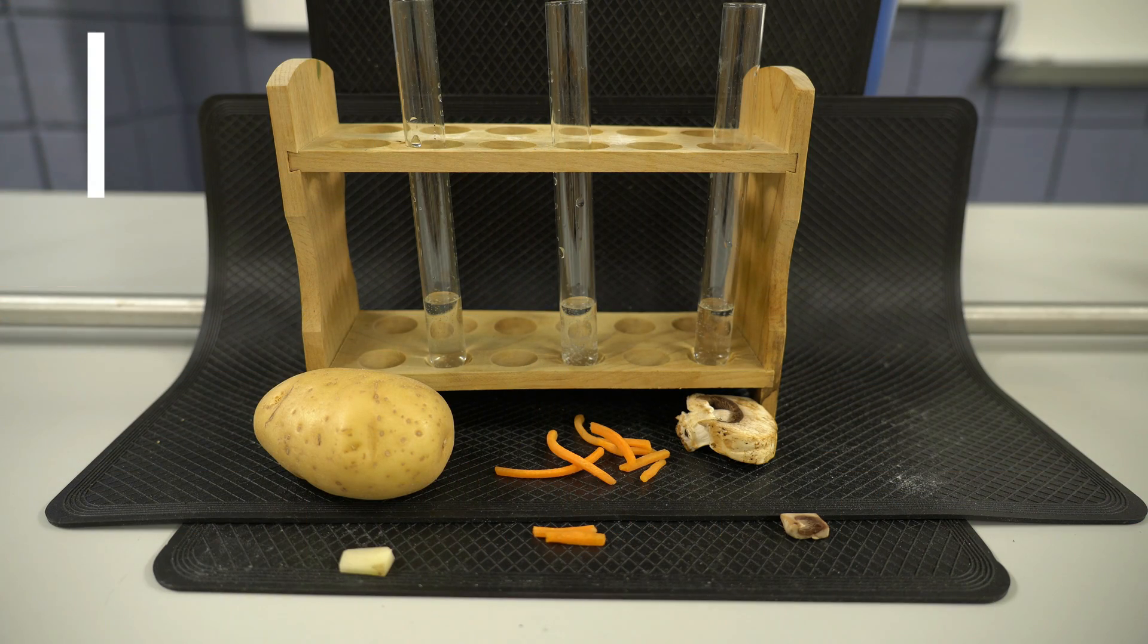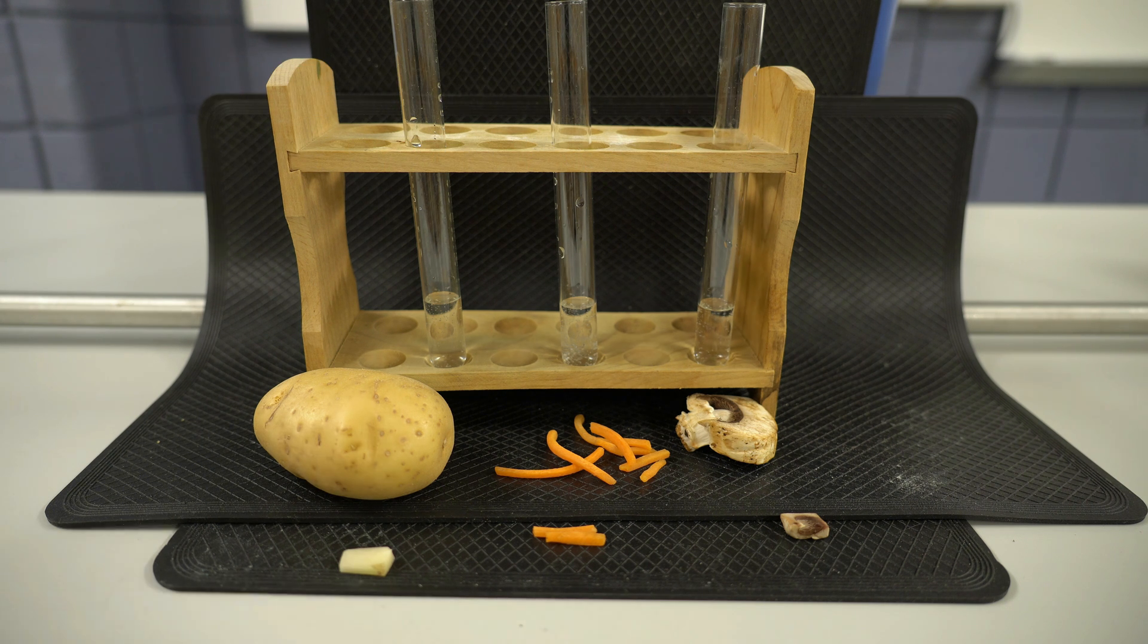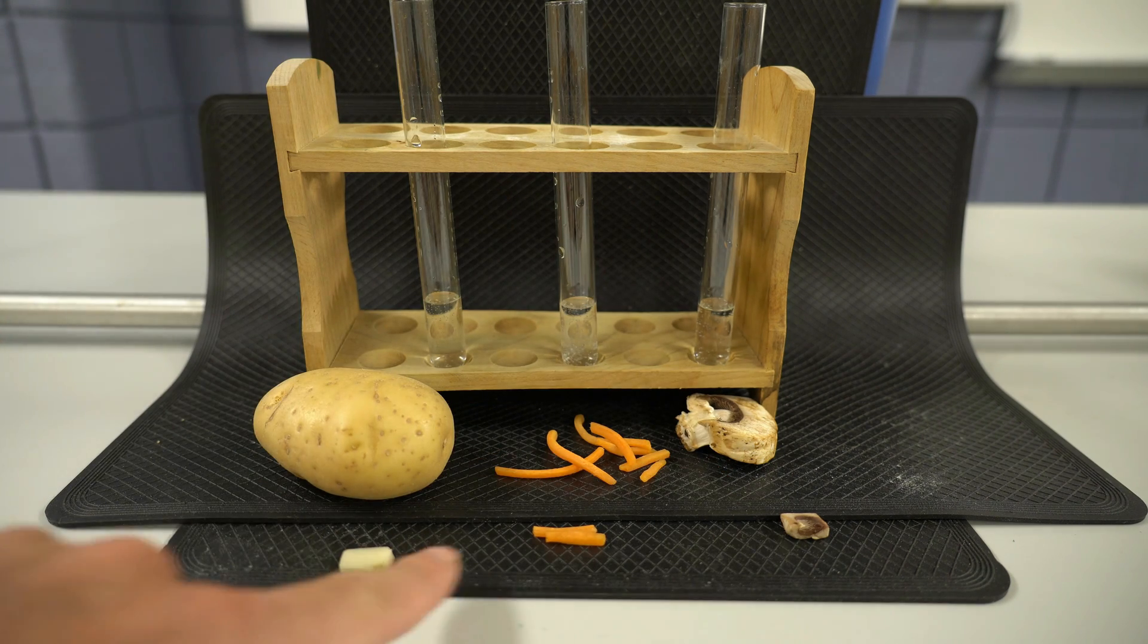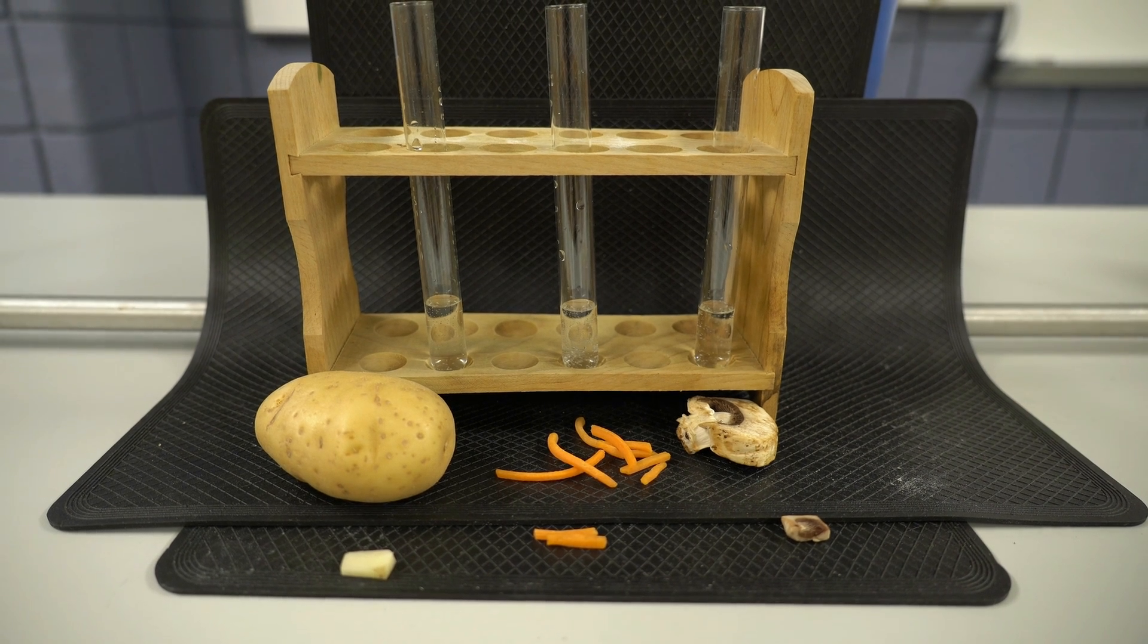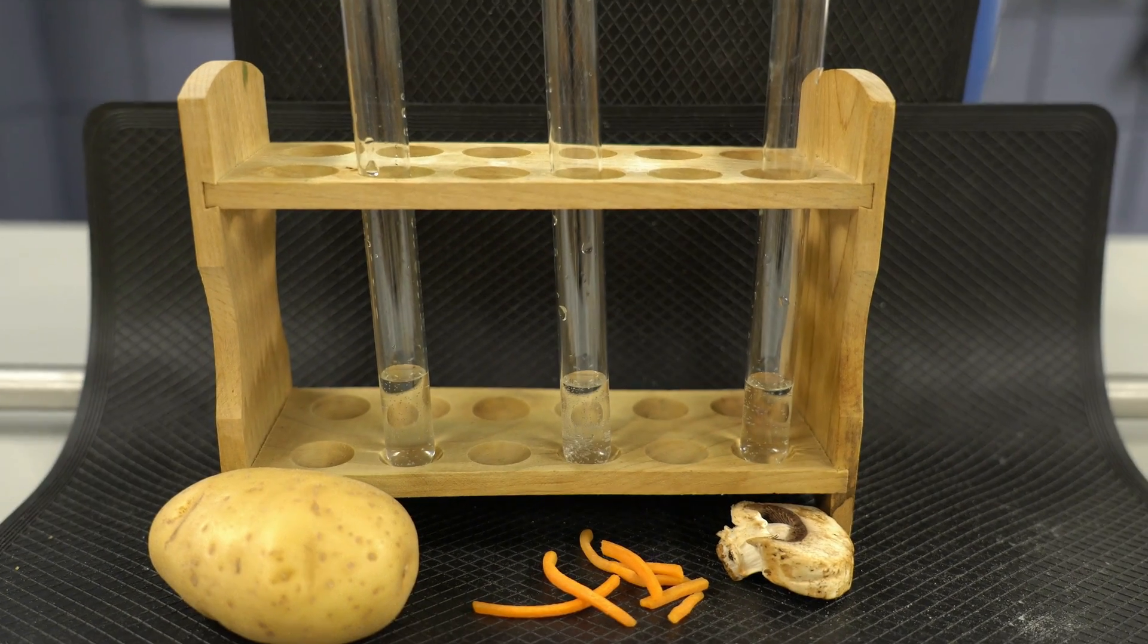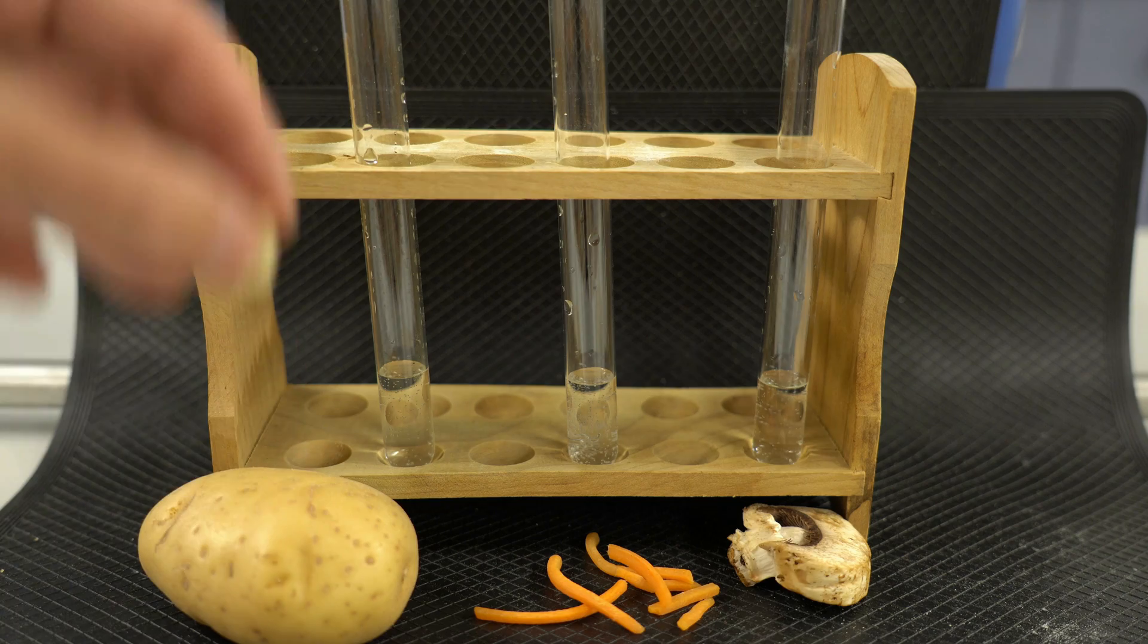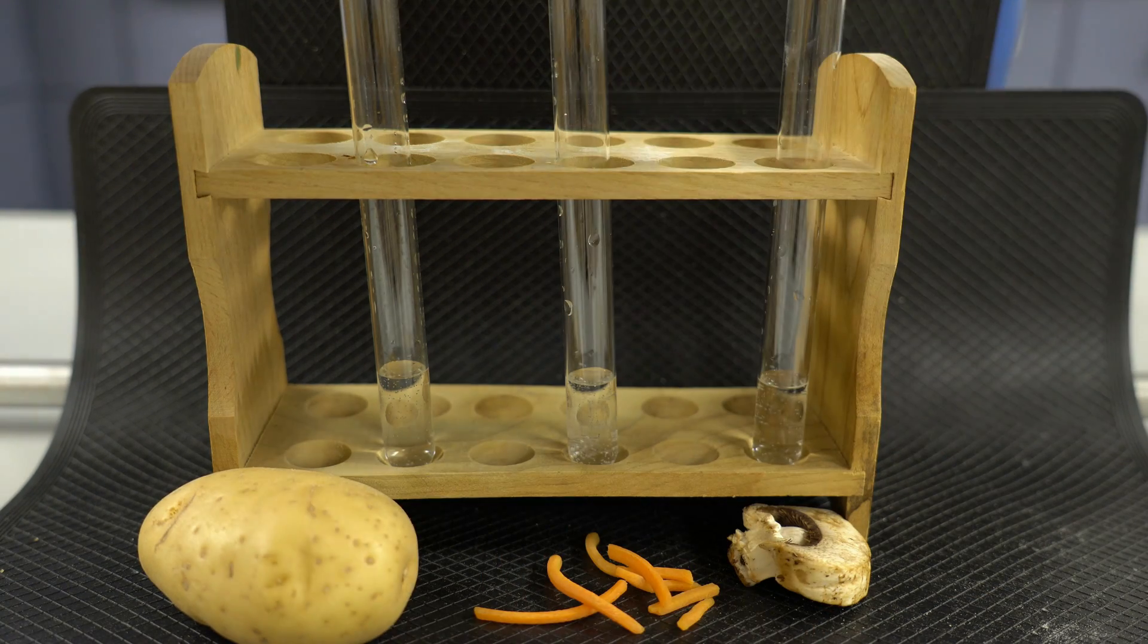So here I have some different food items, and we're going to assess the amount of catalase enzyme they have based on their reaction with hydrogen peroxide. I've got potato, carrot, and mushroom. I've cut sections here, trying to keep the surface area the same. I'm going to add them to the respective test tubes and see how the reaction rates may differ in relation to the amount of catalase enzyme each contains.